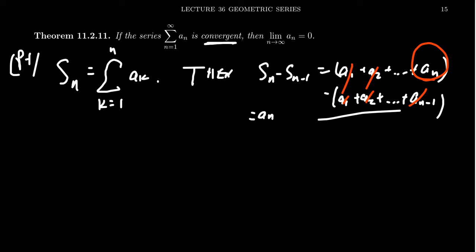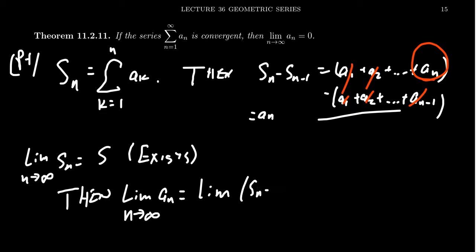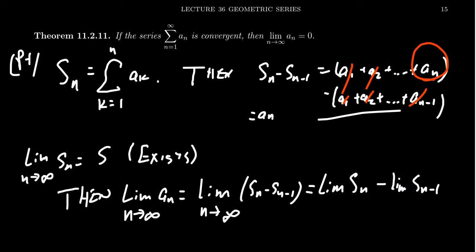By assumption, we're assuming the series is convergent. Since it's convergent, the limit as n approaches infinity of S sub n equals some value S — so this limit exists. Now consider the limit as n goes to infinity of a sub n. As we observed, a sub n equals S sub n minus S sub n minus 1. We can break these up because S sub n is a convergent sequence, giving us the limit of S sub n minus the limit of S sub n minus 1 as n goes to infinity.